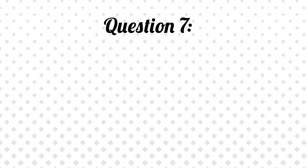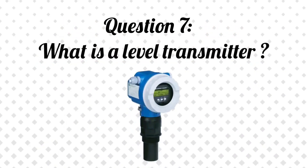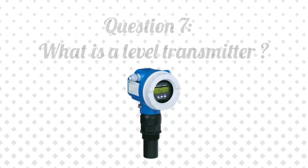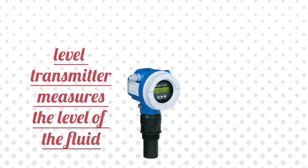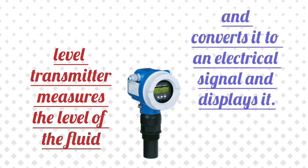Question 7: What is a level transmitter? Answer: A level transmitter measures the level of the fluid, converts it to an electrical signal, and displays it.